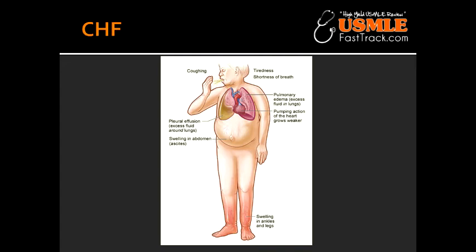What are some of the drugs mainly used for symptomatic relief in congestive heart failure? Drugs used for symptomatic relief include thiazides or loop diuretics. The drug that provides both symptomatic relief and decreases mortality is hydralazine with nitrate therapy.